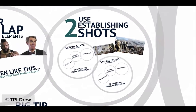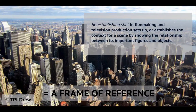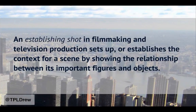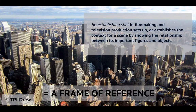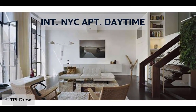The second way to do that is to use establishing shots. I do this very frequently, and it helps create a frame of reference inherently. An establishing shot is actually a television or film term. In filmmaking and TV production, it sets up or establishes the context for a scene by showing the relationship between its important figures and objects. This is an establishing shot — exactly what a frame of reference is. It's showing you that we're in Manhattan, and that establishes the next scene you're going to see. So if you're watching a sitcom, you might start with an exterior shot of New York, and then zoom into the interior of a New York City apartment.